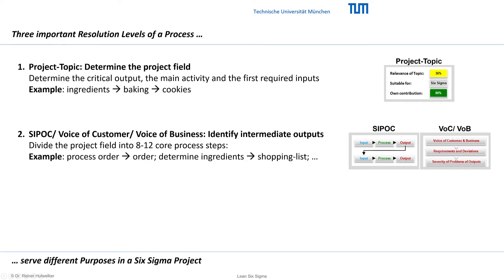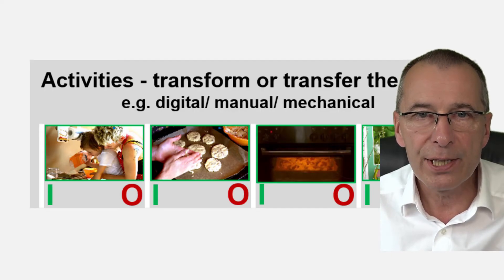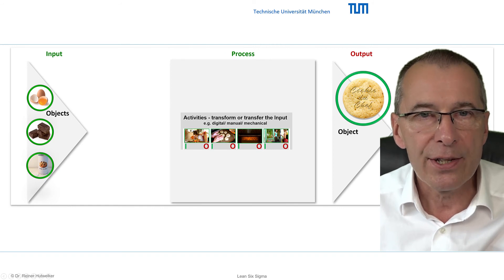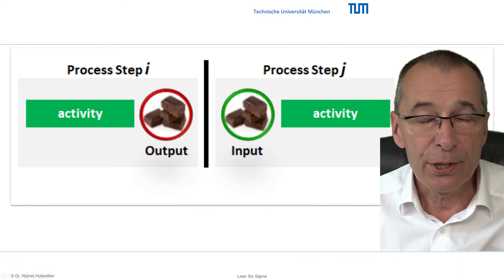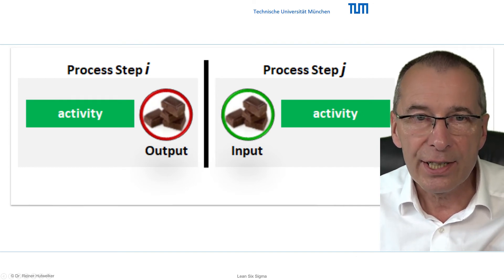Second, identification of relevant intermediate outputs. To identify the relevant intermediate outputs, which may themselves have problems, we divide the overall process into 8 to 12 core process steps with respective inputs, activities and outputs. Third, identification of the negative influences on the problems. To identify the triggers of the problems, we structure the core process steps in detailed input-activity-output units to detect all the negative influences that trigger or amplify all problems of the outputs. Please note: in any perspective on a process, from its macroscopic summary to its microscopic resolution, the input-activity-output structure remains the same. Depending on the perspective, the problems of a preceding output object switch the role to an input and become the negative influence on the following process step, even if the supplier of the output is identical with the customer of this input.